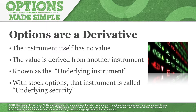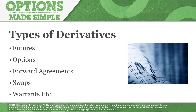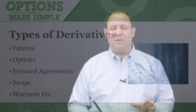With stock options, that instrument is called the underlying security. If you're dealing with forex options, it would be the underlying currency. 'Underlying security' is the technical term we use. There are many different types of derivatives in the overall derivatives market: the futures market, the options market, forward agreements, swaps, warrants, and all sorts of other derivative instruments.